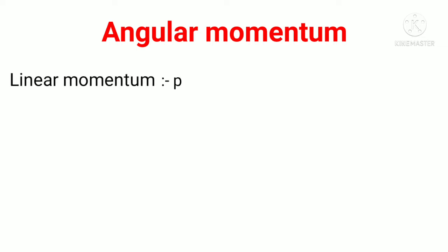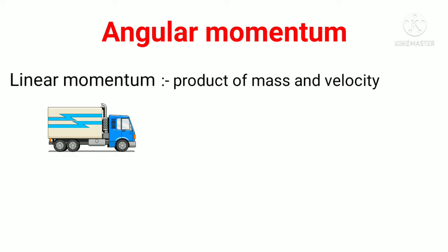Linear momentum is the product of mass and velocity. For example, consider an object of mass m moving in a straight line with velocity v.